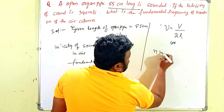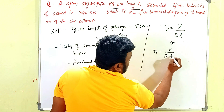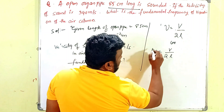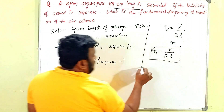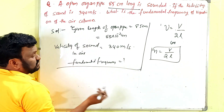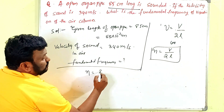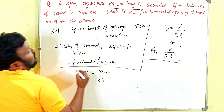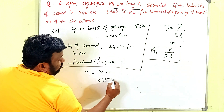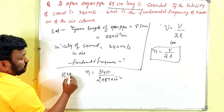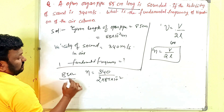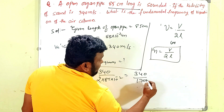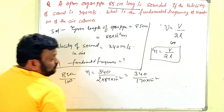You can also write it as n = v / 2L. If you have any confusion between the two formulas, remember: for this problem n = v / 2L. Substituting the values: n = 340 / (2 × 85 × 10⁻²), which gives 340 / 170 × 10⁻².